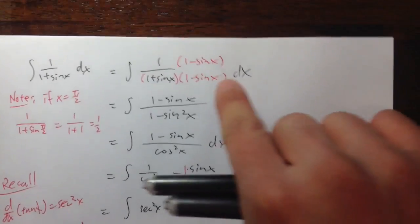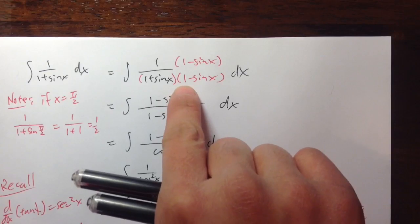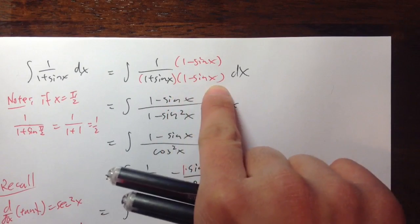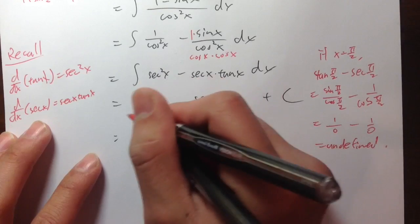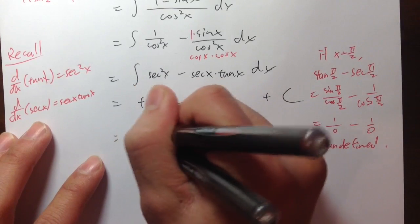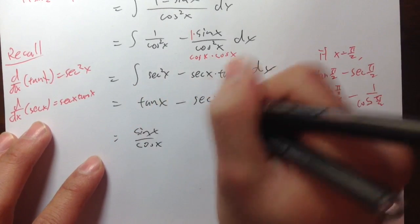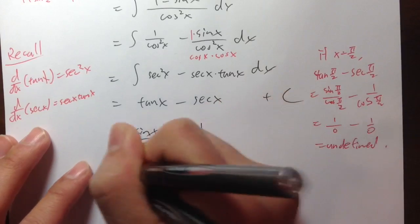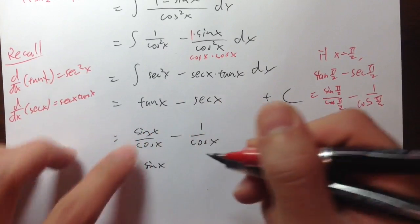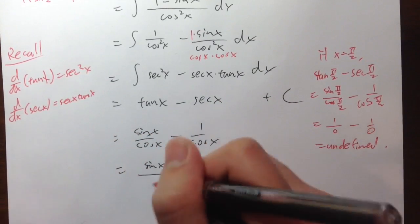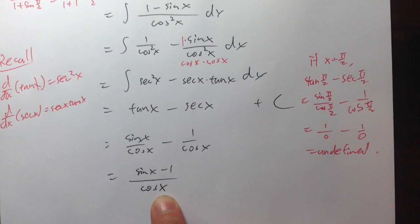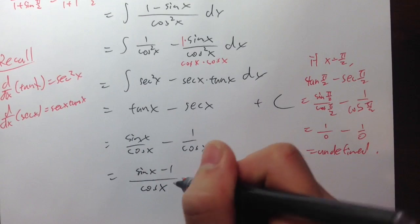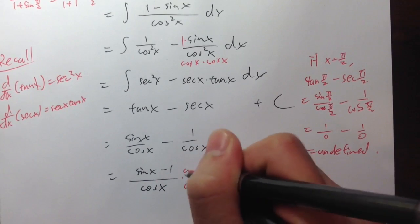The problem arose because we multiplied top and bottom by the conjugate 1 minus sin x. To fix that, we need to continue simplifying. Tangent x means sin x over cos x, and secant x means 1 over cos x, so tangent x minus secant x is the same as (sin x minus 1) over cos x. The cos x in the denominator is what causes the trouble, since cos(π/2) gives 0. So we're going to multiply the top and bottom by cos x.